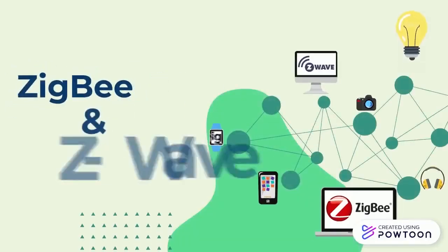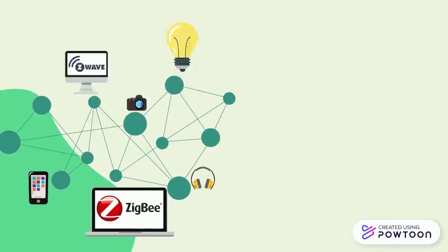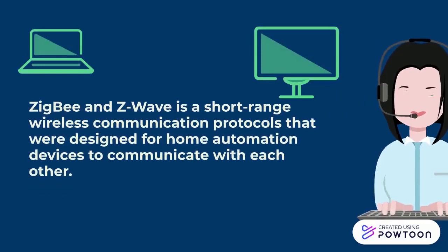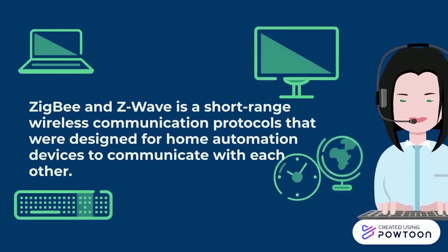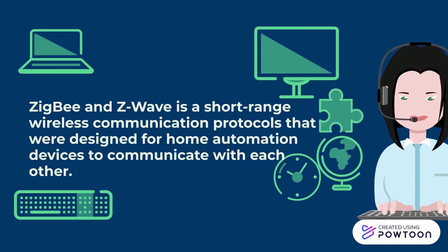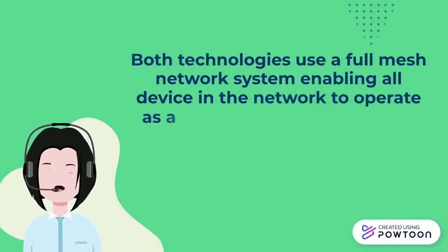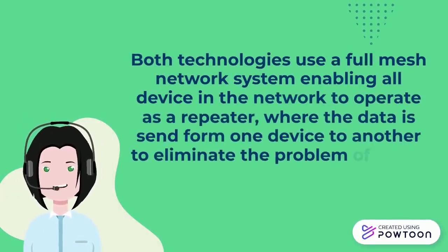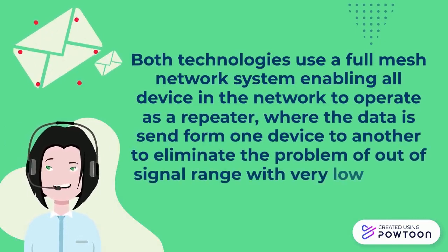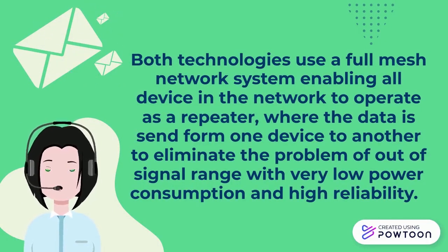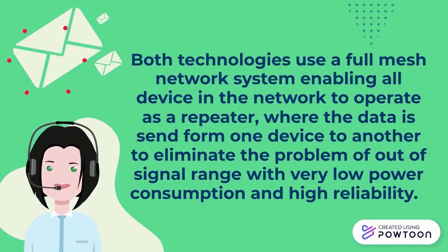Let us introduce ZigBee and Z-Wave. ZigBee and Z-Wave are short-range wireless communication protocols that were designed for home automation devices to communicate with each other. Both technologies use a full mesh network system, enabling all devices in the network to operate as a repeater, where data is sent from one device to another to eliminate the problem of out-of-signal range, with very low power consumption and high reliability.